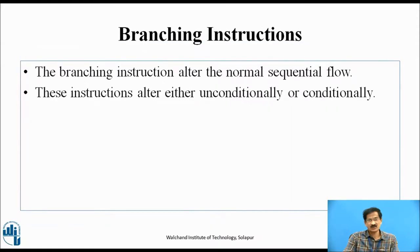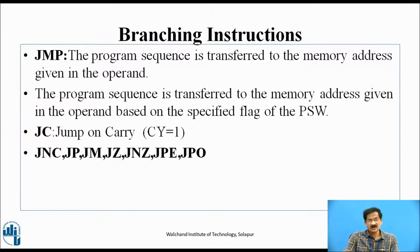Branching instructions alter the normal sequence flow, either unconditionally or conditionally. By the execution of branching instructions, the normal sequence of instructions to be executed is altered, and the program will jump conditionally or unconditionally. JMP: The program sequence is transferred to the memory address given in the operand. Conditional jump: The program sequence is transferred to the memory address given in the operand based on the specified flag of the program status word.